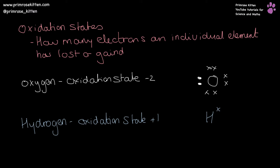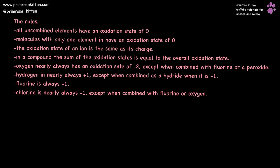Hydrogen nearly always has an oxidation state of plus one, which makes sense since when bonding in a compound, it is going to be giving up its electron to something else. It is going to be losing an electron, losing a negative charge, so it's going to end up with a positive charge. These are the rules for oxidation states. You are going to need to learn these confidently and be able to apply these. This is the first in a long series of videos where I'm going to take you through applying them in a range of different situations, but to start with, here are just the rules.